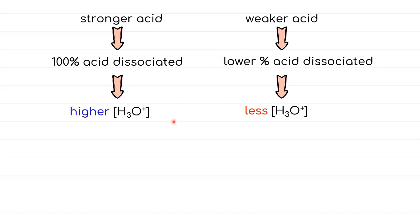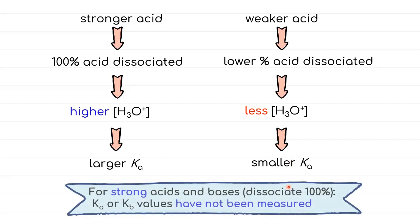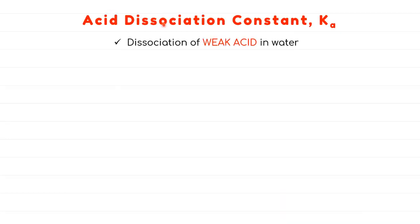The concept is still the same. If it's a strong acid, then the Ka value will be large. If it's a weak acid, then the Ka value will be small. Since this constant tells you the ability to dissociate in water, strong species have no Ka or Kb to be measured. We'll look thoroughly at each constant. Acid dissociation constant Ka is only applicable for weak species.